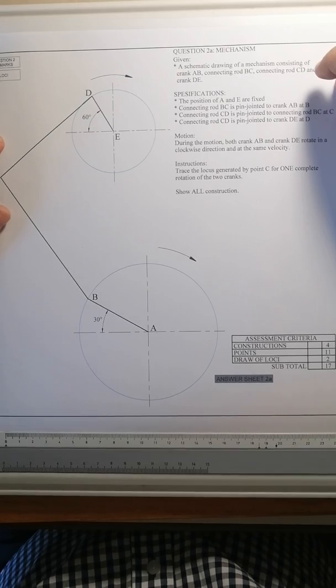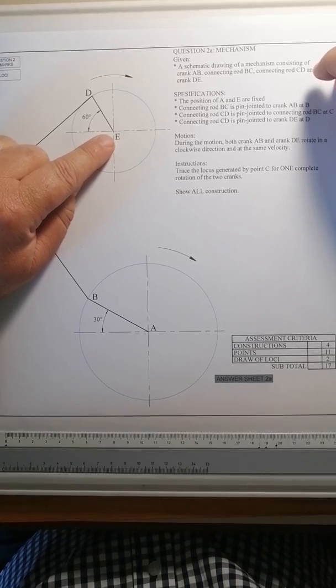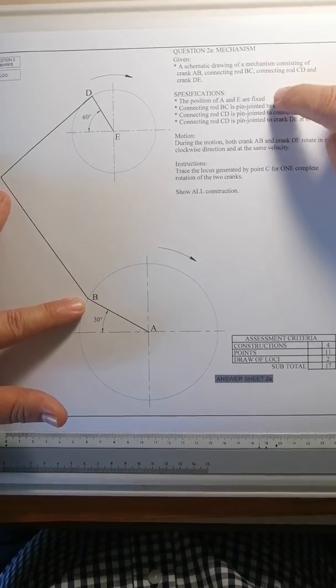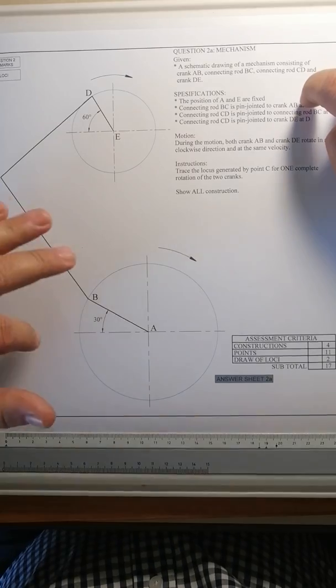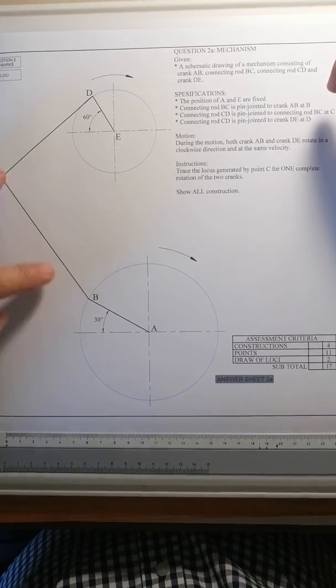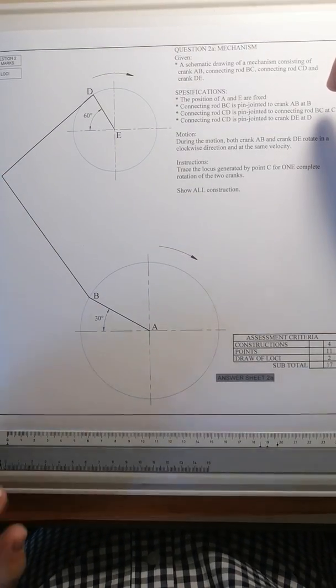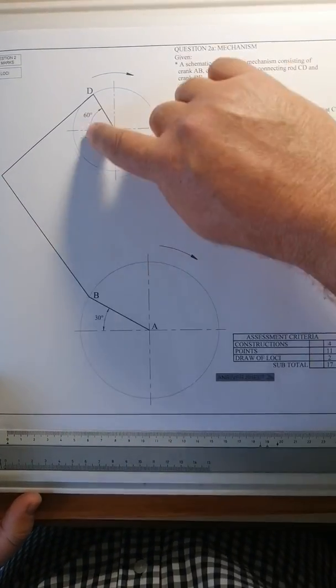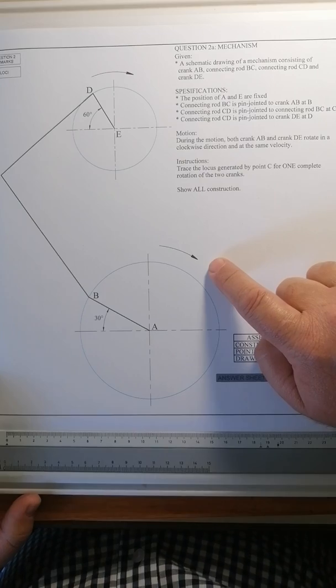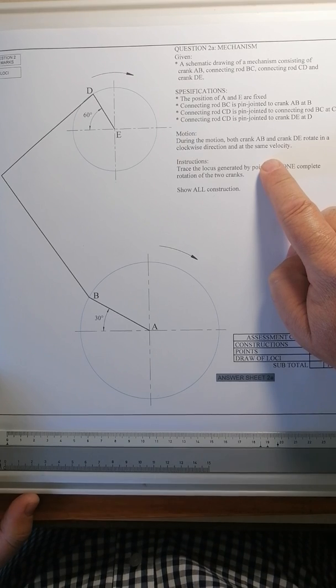The specifications: the position A and the position of E is fixed. Connecting rod BC is pin jointed at crank AB so there's a pin over there so it can swirl around that pin. The same with CD is also pin jointed to BC and again CD is pin jointed to DE over there. The motion is this crank will rotate in a clockwise direction, this crank will also rotate in a clockwise direction, and both these cranks are rotating at the same velocity so it's the same speed.